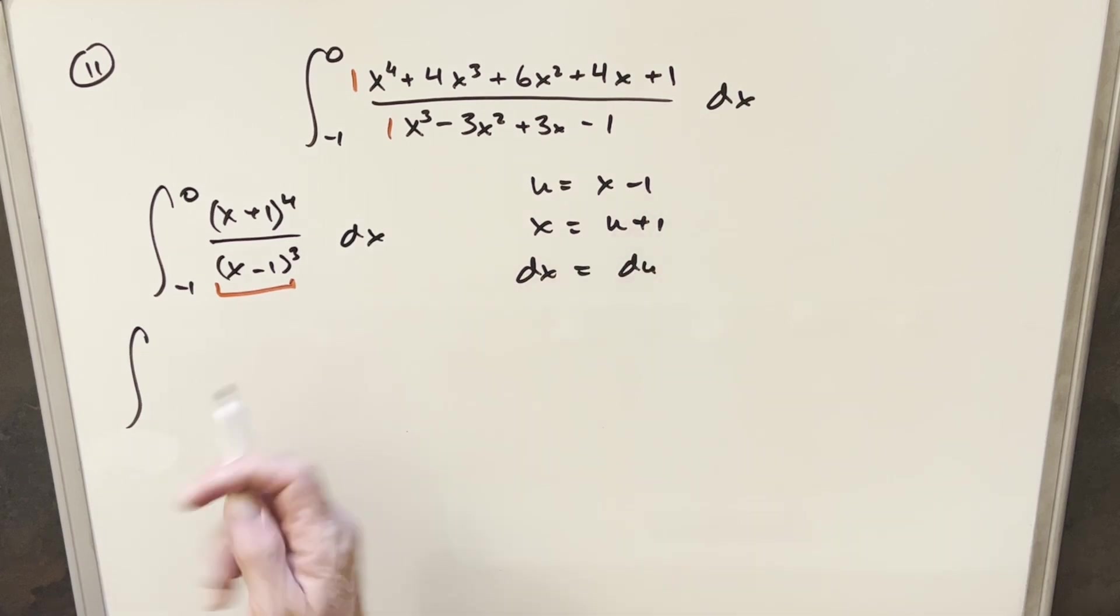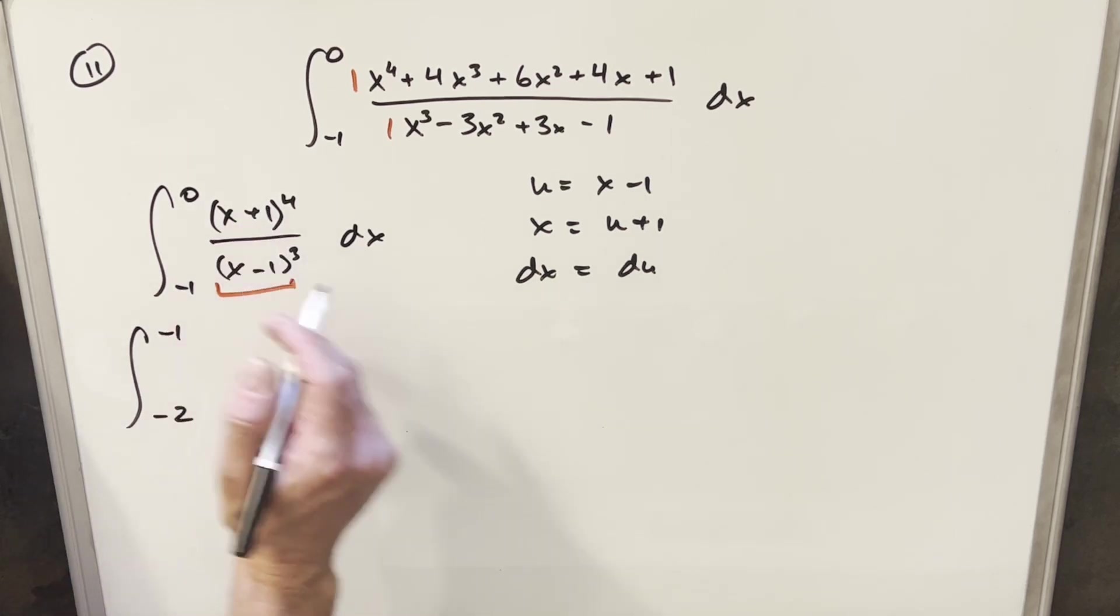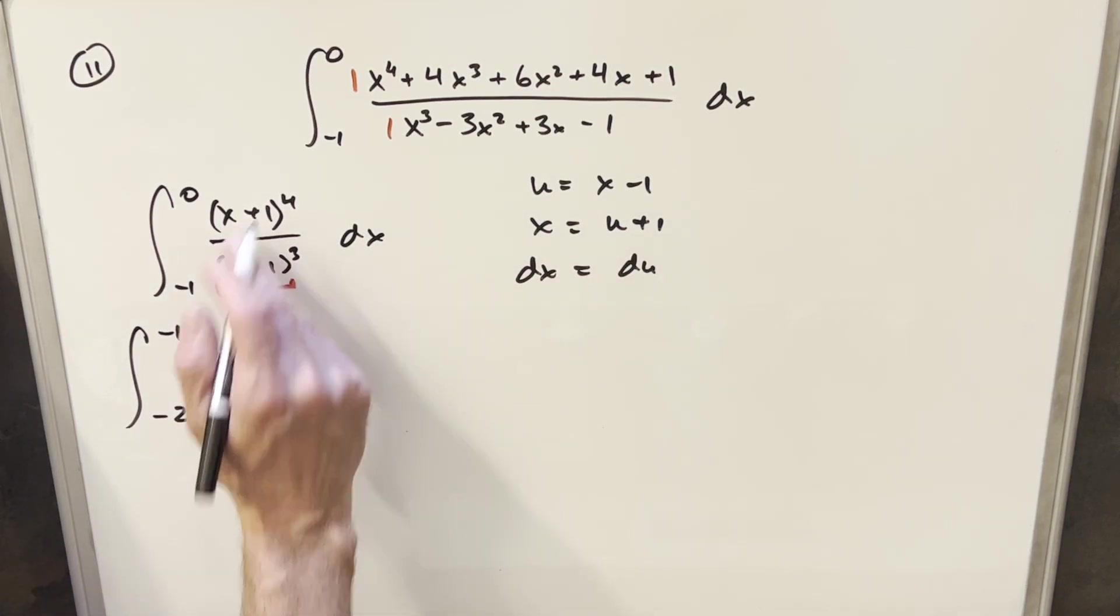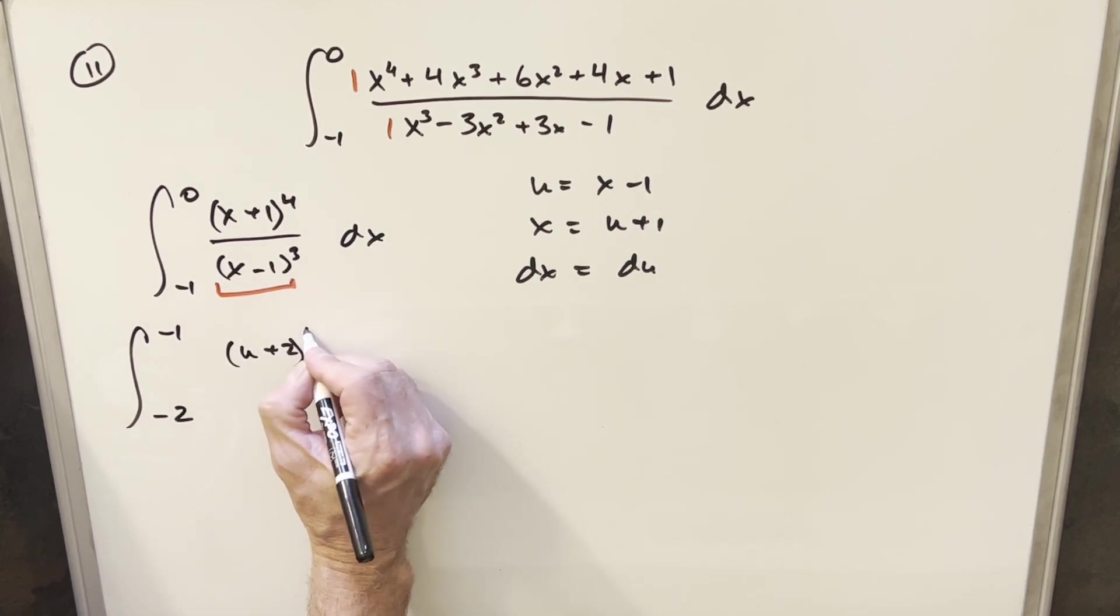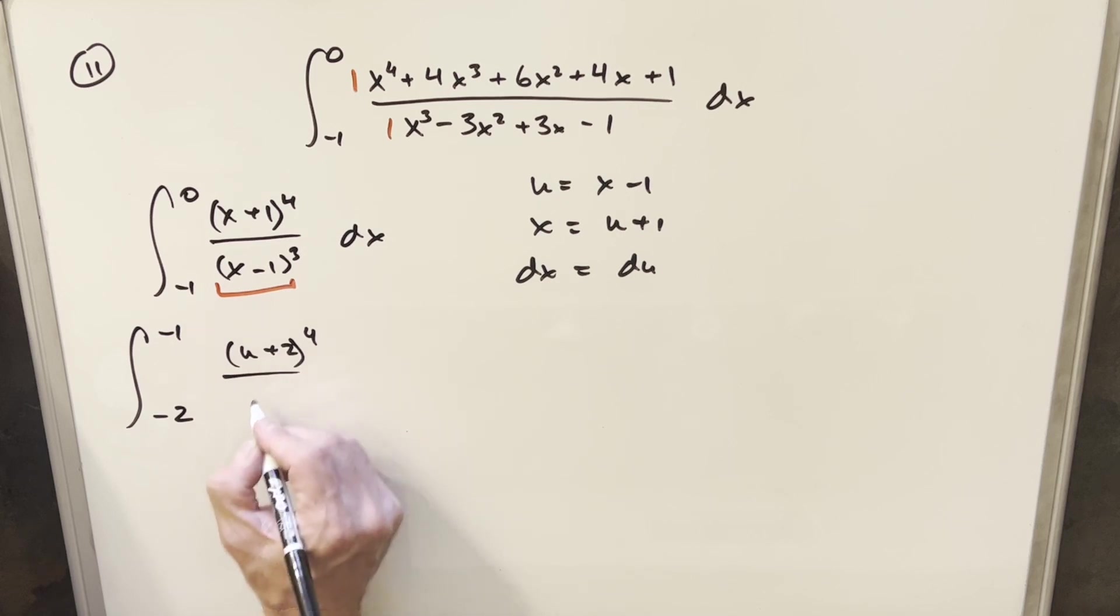So when I plug a 0 in for x here, our upper bound becomes minus 1. And then when I plug a minus 1 in there, lower bound becomes minus 2. And then for this x plus 1, if we plug in u plus 1 for x, we're going to have u plus 2 in the numerator to the 4th. And then this is going to become u cubed du.